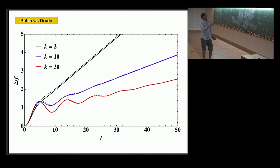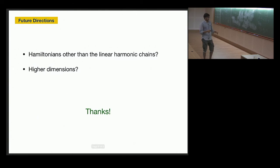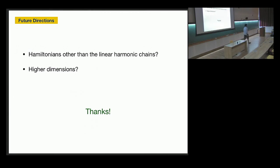And this, you can see the signature in delta t as well, that for larger k, this Drude and Rubin are kind of matching, which we propose. And that's it. Thank you. And I mean, in the future, we can do like higher dimensions and other than harmonic interactions, like anharmonicity, like this Chandan is doing. Thank you.